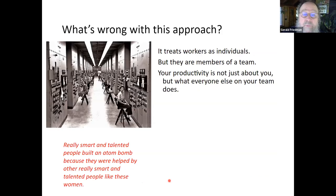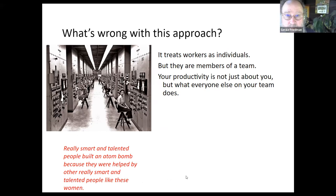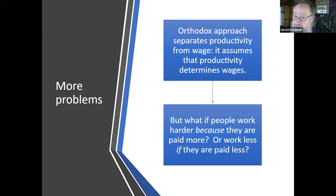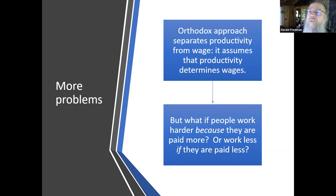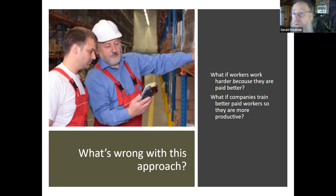Workers are members of a team — productivity is not just about the workers, it's about the team. Smart and talented people built an atom bomb because they were helped by other smart and talented people. The orthodox approach separates productivity from the wage since productivity determines the wage. But what if people work harder because they're paid more, or work less if paid less? We'll get to this in a couple of lectures — it's called efficiency wage theory. Larry Summers is one of the pioneers, and it was suggested by his uncle, Robert Solow. Companies can train better-paid workers — workers work better because they're better trained, which is characteristic of workers in Germany.